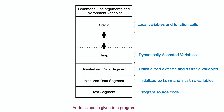The data segment has two parts: the uninitialized data segment and the initialized data segment. In the uninitialized data segment, there are various types of variables. At the top, there are command line arguments and environment variables.